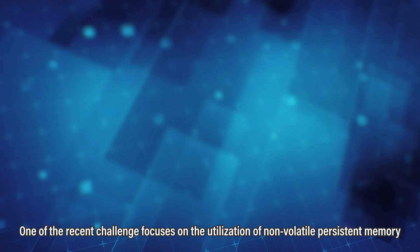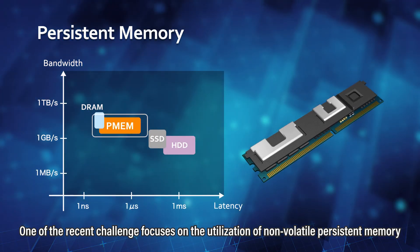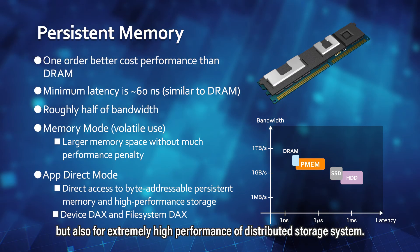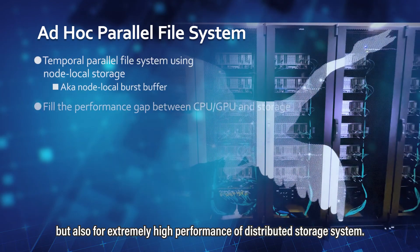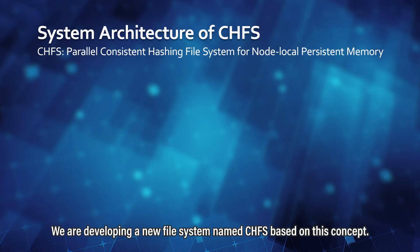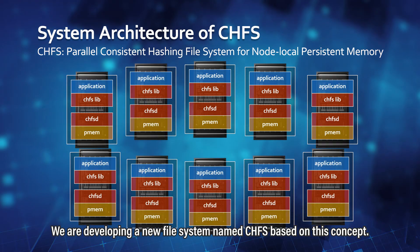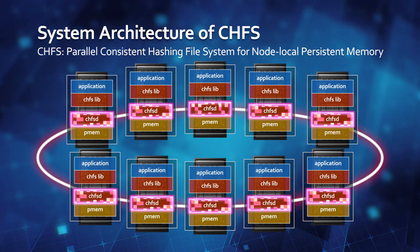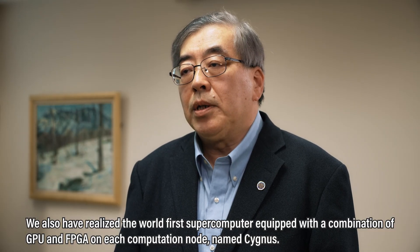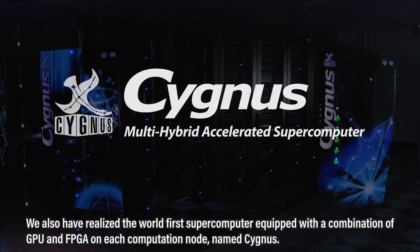One of the recent challenges focuses on the utilization of non-volatile persistent memory, not only for very large capacity memory, but also for extremely high performance distributed storage systems. We are developing a new file system named CHFS based on this concept. We have also realized the world-first supercomputer equipped with a combination of GPU and FPGA on each computation node, named Cygnus.